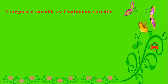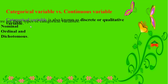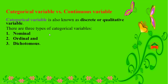Now we are going to learn what is a categorical variable and what is a continuous variable. A categorical variable is also known as a discrete or qualitative variable. There are three types of categorical variables: nominal variable, ordinal variable, and dichotomous variable. In the next slide we will learn the detailed definitions of nominal, ordinal, and dichotomous variables.